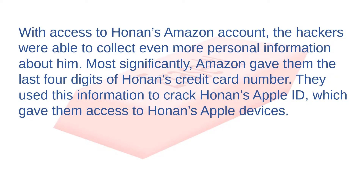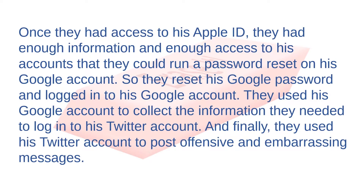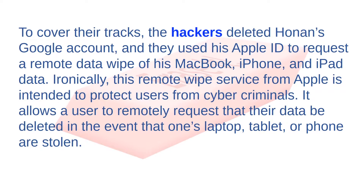With access to Honan's Amazon account, the hackers were able to collect even more personal information. Most significantly, Amazon gave them the last four digits of Honan's credit card number. They used this to crack Honan's Apple ID, giving them access to his Apple devices — using the same trick of calling Apple customer service to reset his password. Once they had his Apple ID, they ran a password reset on his Google account, then logged into Google, used it to access his Twitter account, and posted offensive and embarrassing messages. To cover their tracks, they deleted Honan's Google account and used his Apple ID to request a remote data wipe of his MacBook, iPhone, and iPad.